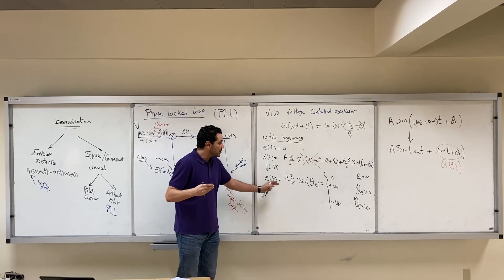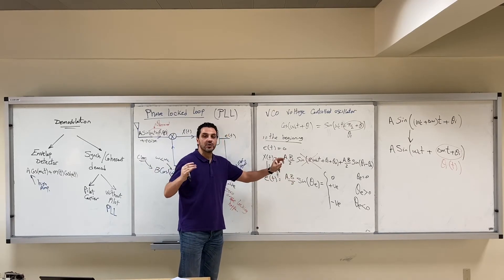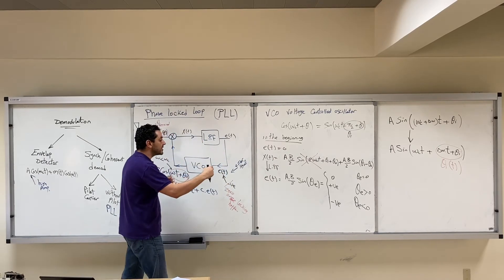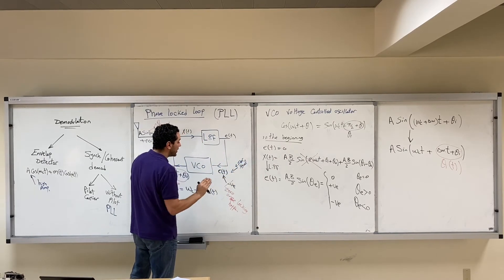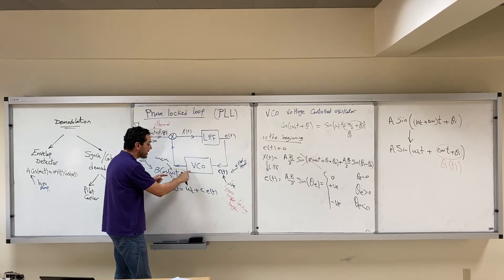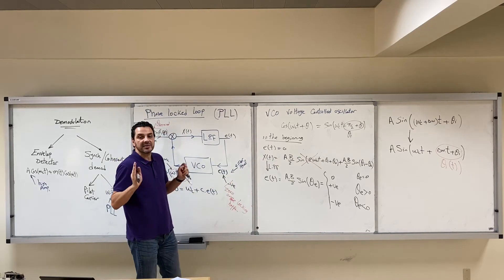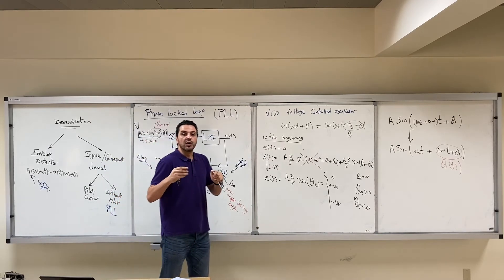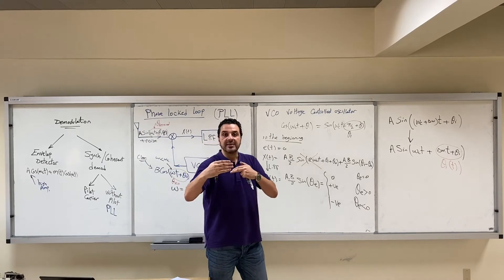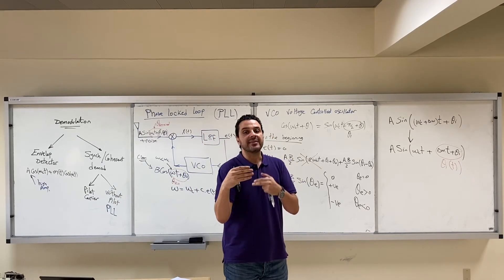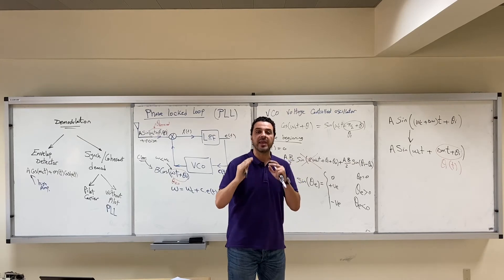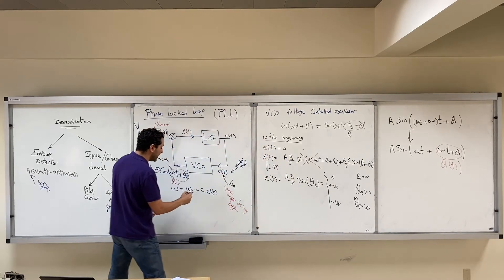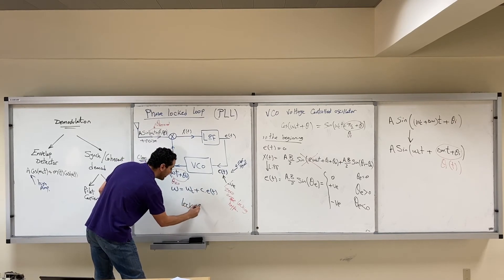The error signal will increase to the maximum AB/2 and cannot increase further, so it cannot increase the frequency coming out of the VCO above a certain value and will not be able to track the incoming signal. The PLL therefore has a range within which it can track the incoming signal; outside this range it cannot track. This range is called the lock range.